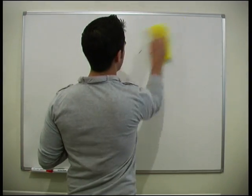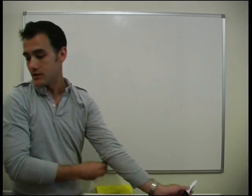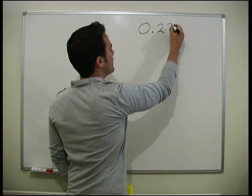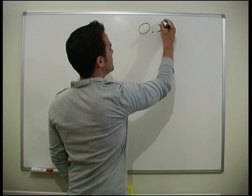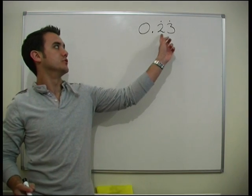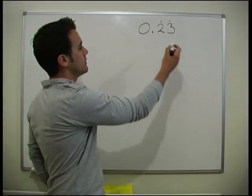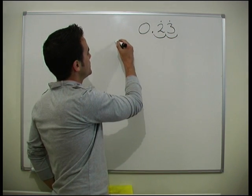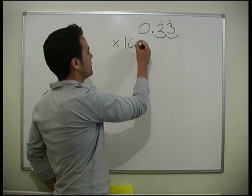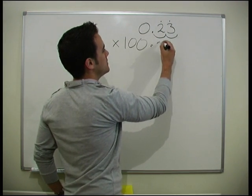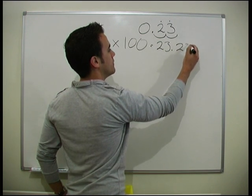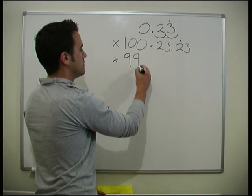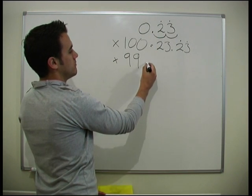Now let's do it with a slightly more complicated example. Let's do 0.23 recurring — so both the 2 and the 3 are going to recur: 2, 3, 2, 3, 2, 3. This time we're going to need to times by something a bit more — we're going to need to times by 100. So this time we're going to find what times 100 equals, and it will be 23.23 recurring.